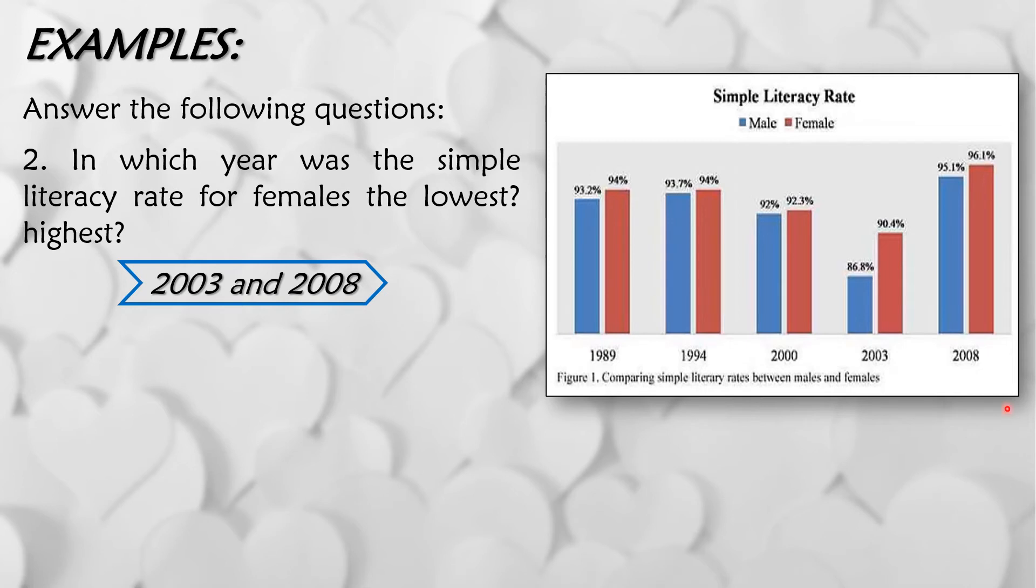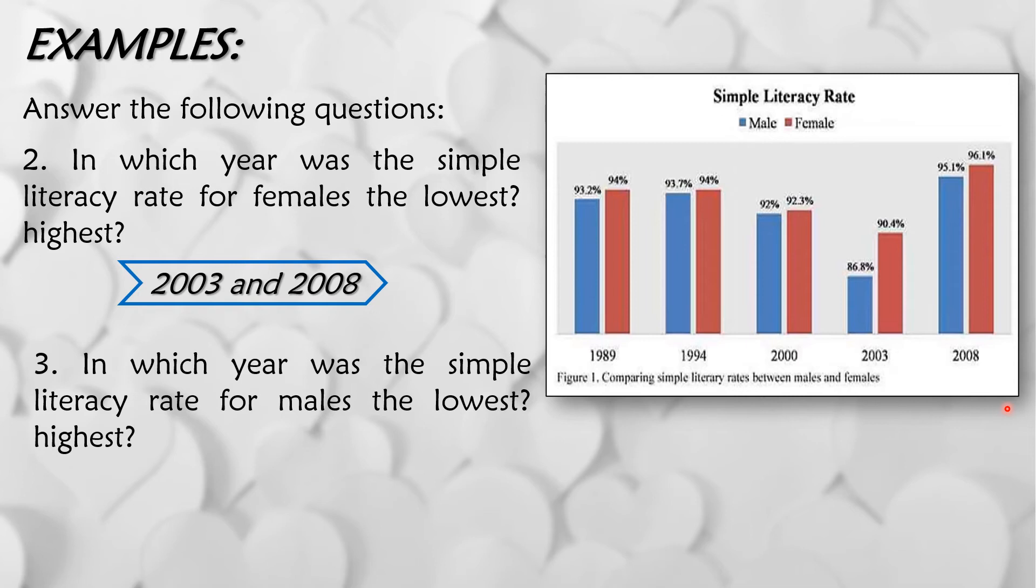And the highest is 2008, na merong 96.1%. Third question, in which year was the simple literacy rate for males the lowest and the highest? So ang lowest ng male is 2003 also, na kung saan meron siyang percent na 86.8%. And then ang highest ay 2008, which is 95.1%.